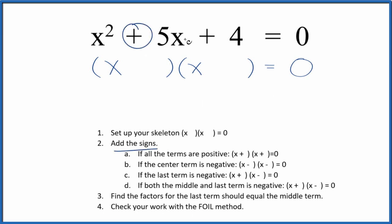So everything's positive here. If all the terms are positive, that means we put positive signs in our skeleton equation. Now we can find the factors for the last term—that's the four here—and they should add up to the middle term.